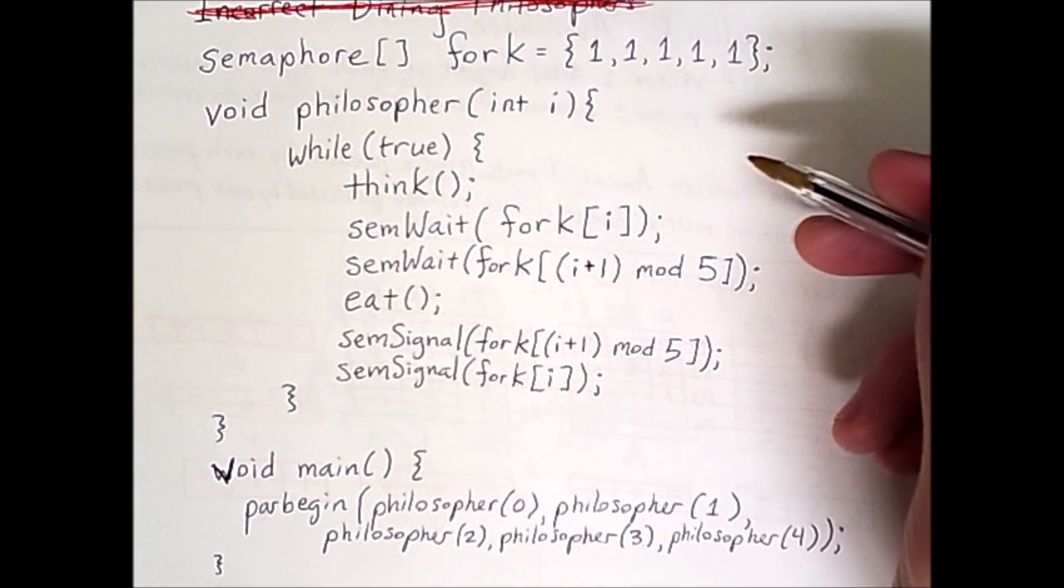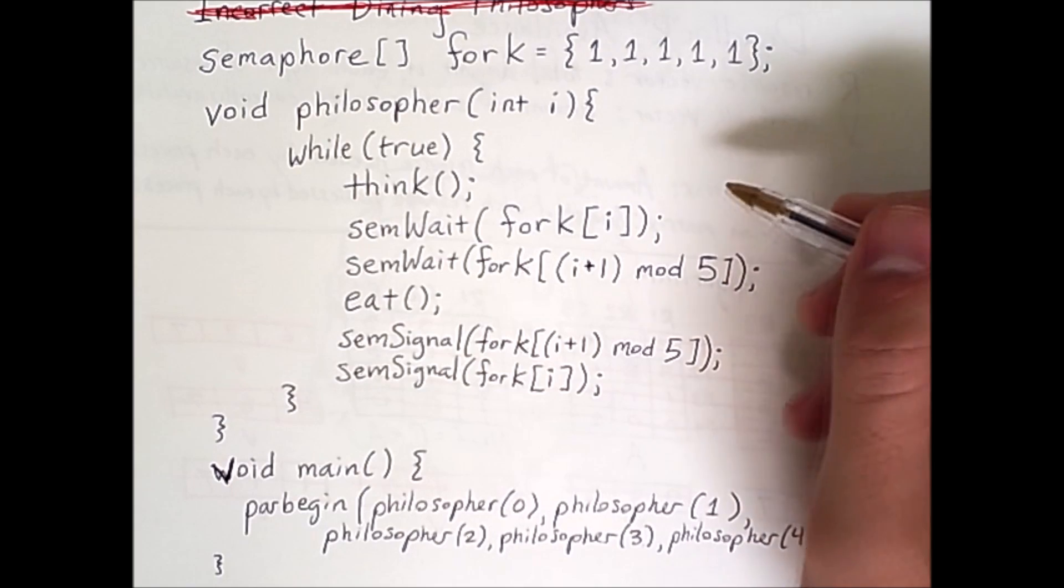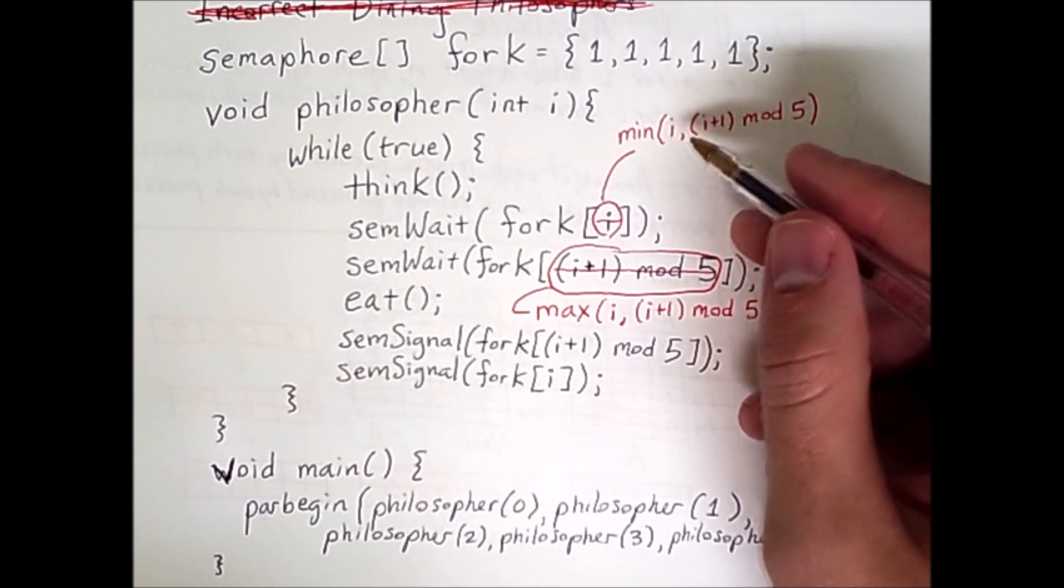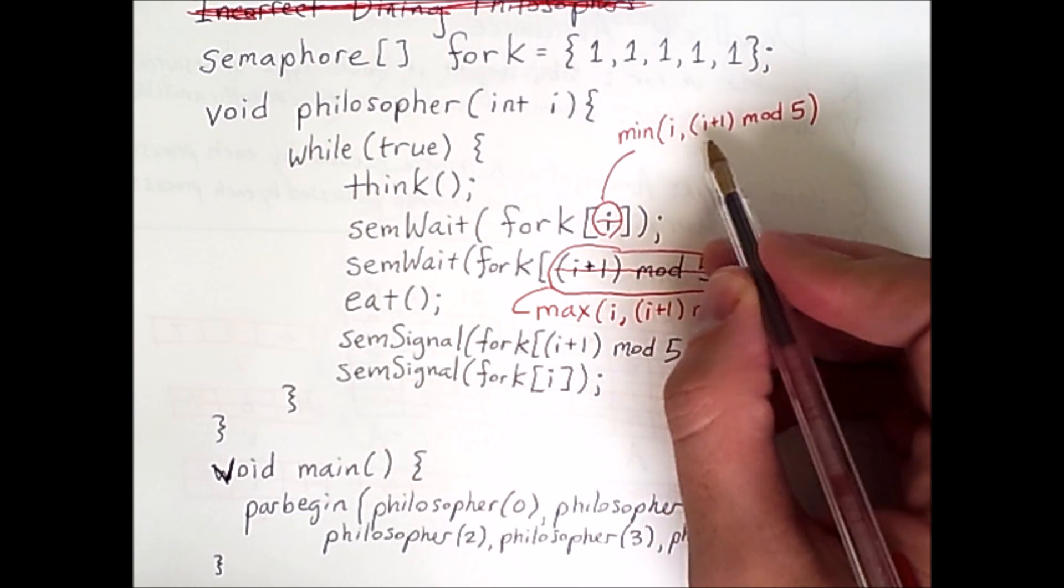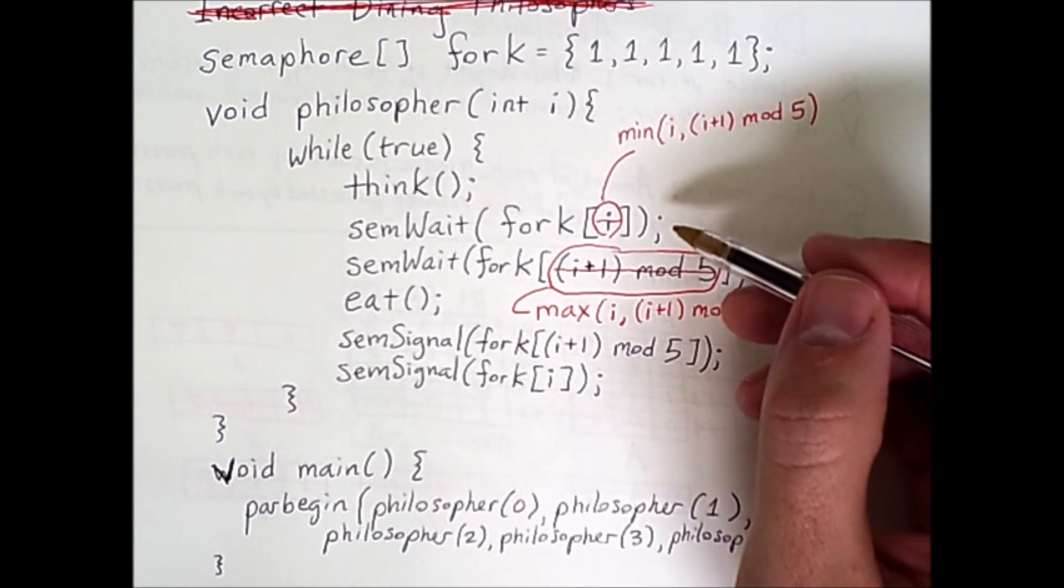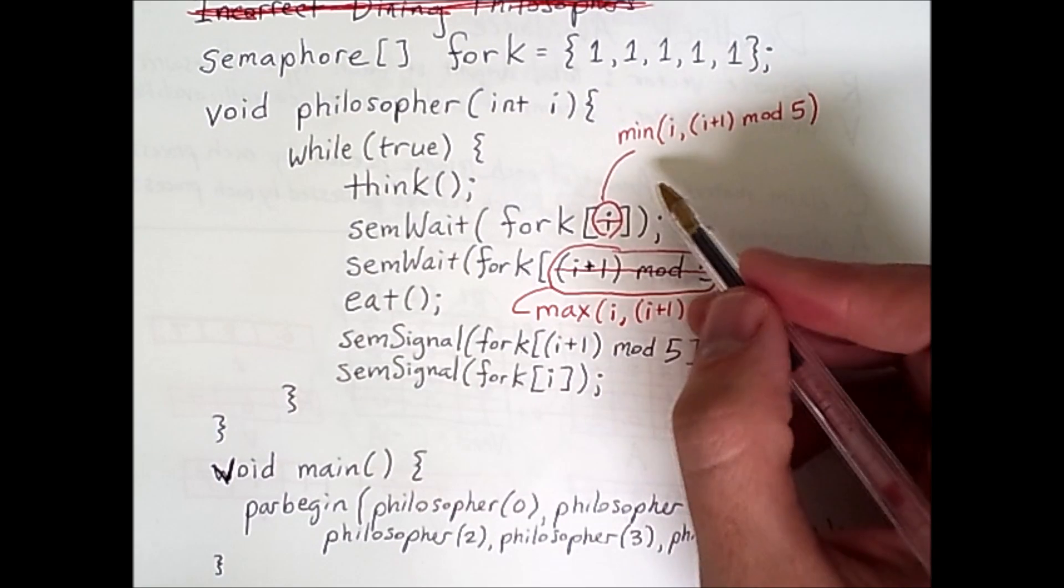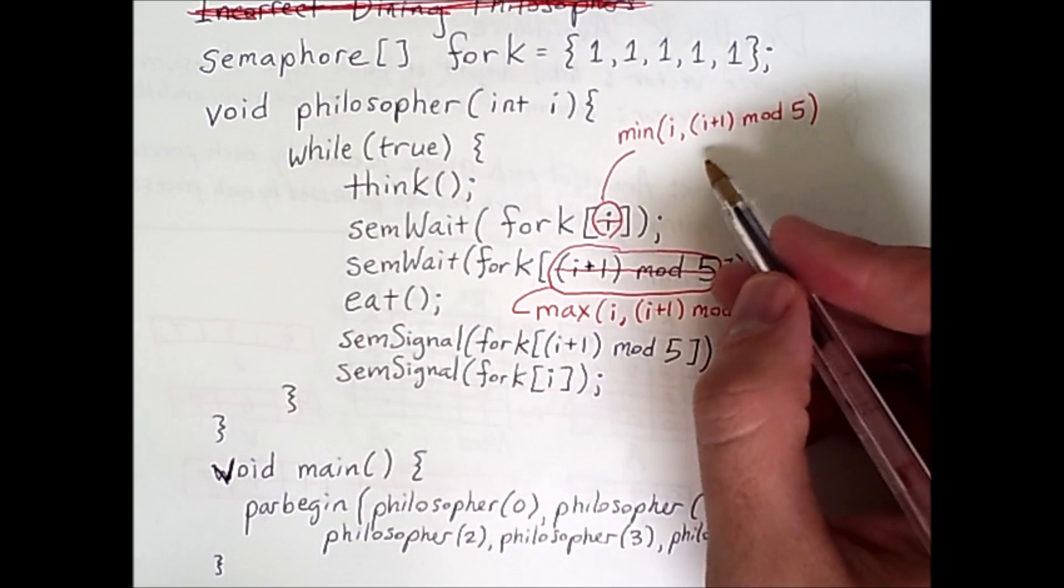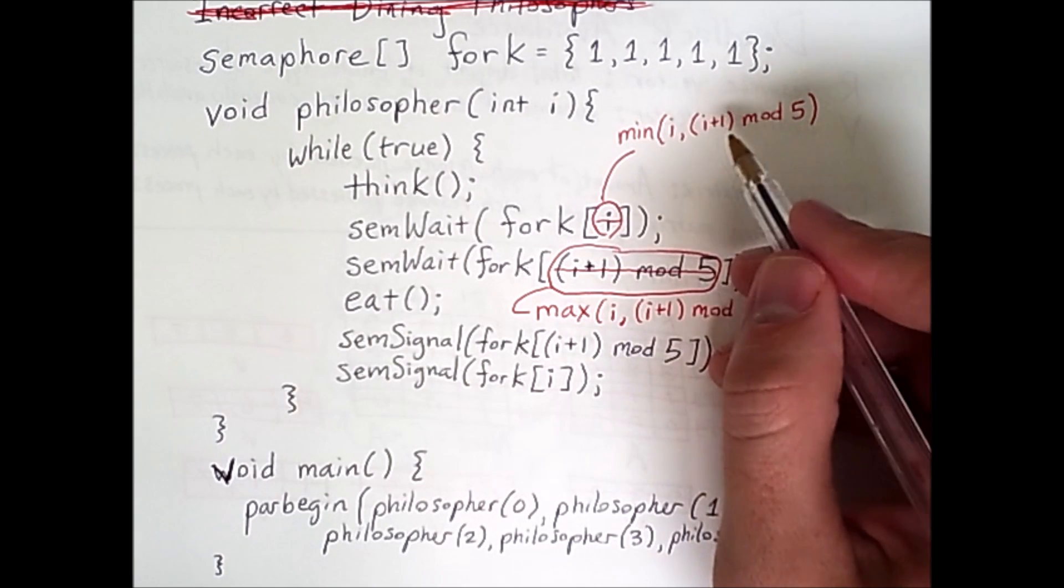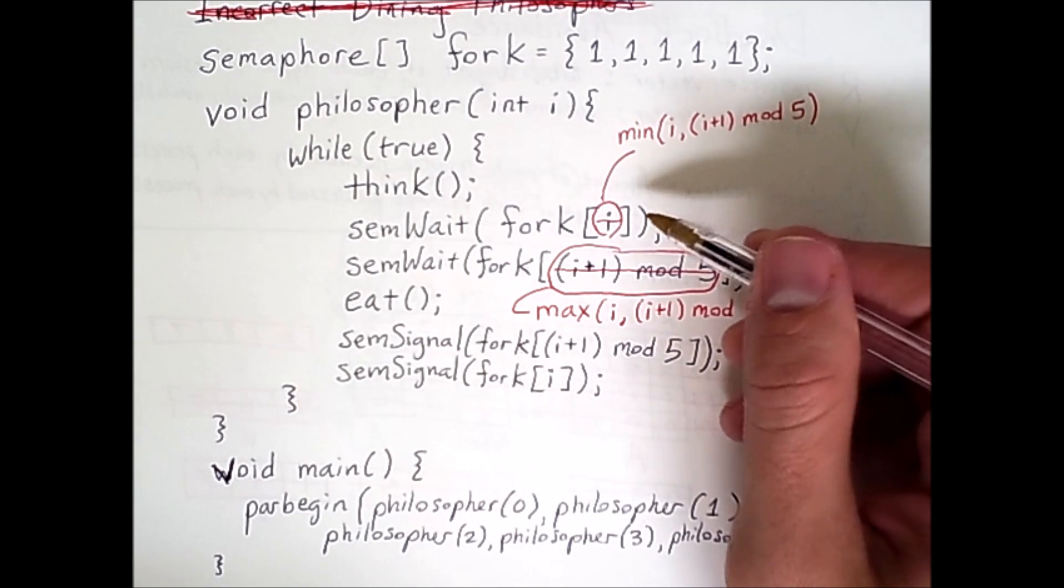The simple way to change this is to replace this internal i and this i plus 1 mod 5 with the following. In the case of the first fork being claimed, instead of claiming fork i, we claim the minimum of i and i plus 1 mod 5. If we are philosopher 0, then we are looking for the minimum between 0 and 1, so we're still getting fork 0. If we're philosopher 1, we're looking at 1 and 2. Philosopher 2 looks at forks 2 and 3, and 3 looks at forks 3 and 4. But philosopher 4 looks at forks 4 and 0. The minimum of those two is 0, so that philosopher will attempt to claim fork 0 before fork 4.